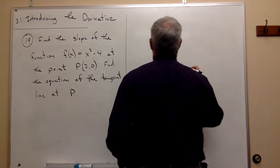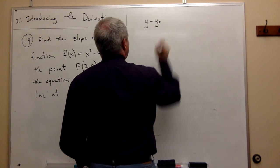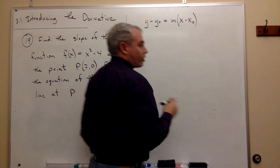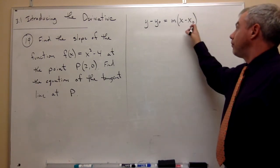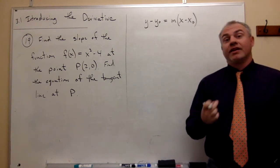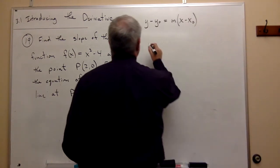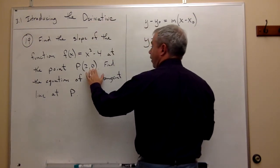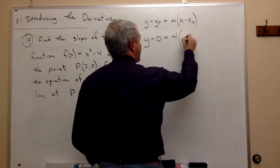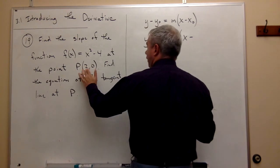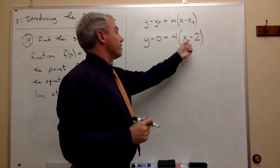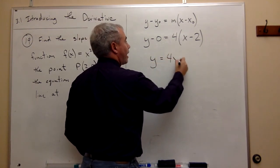I can use the point-slope form of a line: y - y₀ = m(x - x₀), where x₀ and y₀ are my known x and y values. So (2, 0) is my x₀ and y₀, and m = 4 is my slope. Plugging in: y - 0 = 4(x - 2), which gives y = 4x - 8.